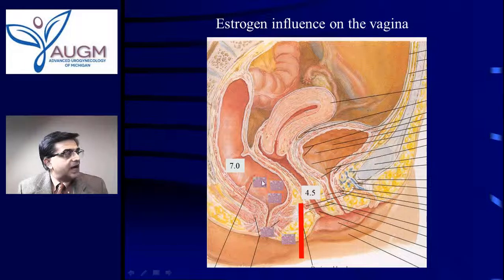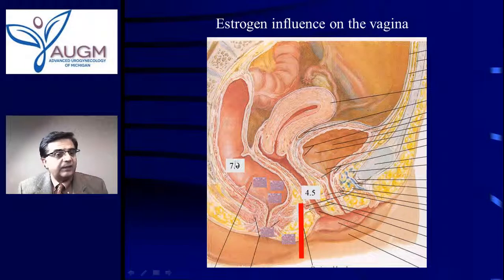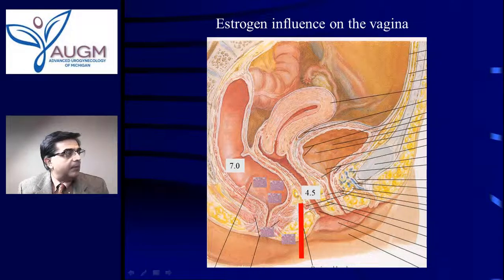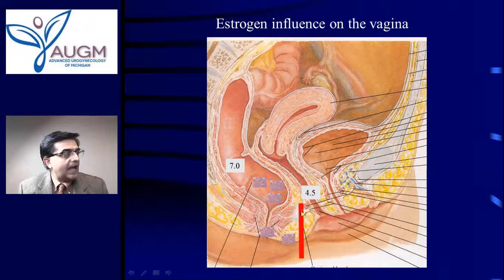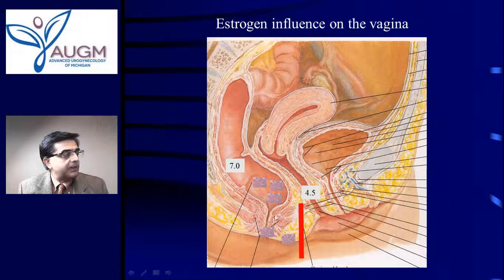This thinning decreases the vaginal pH when there is normal estrogenization, and this low pH is very important for preventing bacteria from moving forward. E. coli are very happy in the rectum where the pH is high at 7 — neutral or slightly alkaline. But because the vaginal pH from estrogenization is low at 4 or 4.5, it acts like an acid barrier to prevent the bacteria from moving forward.